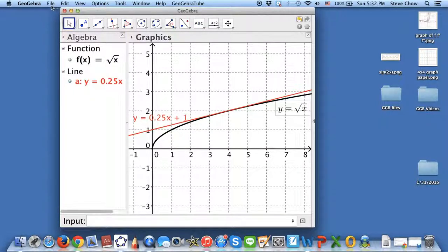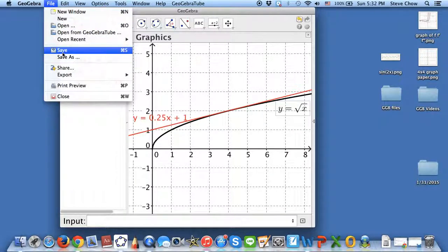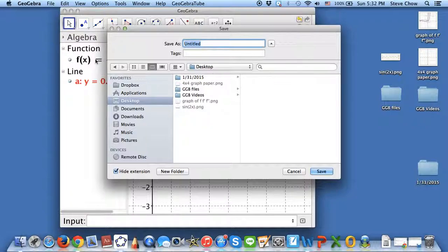And of course, you should save this, so that you can reuse it later. Save the file. I'm just saving this to my GeoGebra files. I will type in this as square root of x and tangent line.